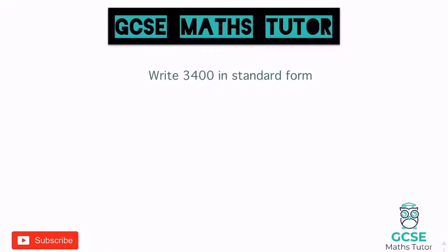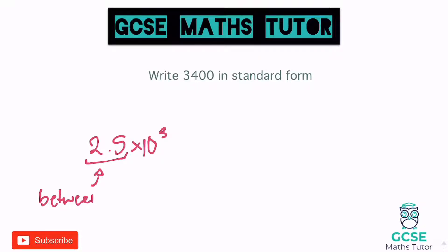The rules for standard form: we're going to have a number — something like 2.5 times 10 to the power of 3. This is what something in standard form looks like. The number at the start has to be between 1 and 10, and it's always times 10 to the power of something. We're going to look at writing 3,400 in standard form, making sure we follow these rules.